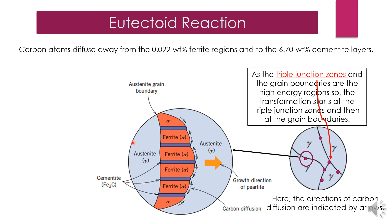Carbon atoms diffuse away from the ferrite because ferrite cannot dissolve too much carbon in its solid solution, so it rejects carbon out of it and moves to the cementite layers which has 6.7 weight percent carbon.